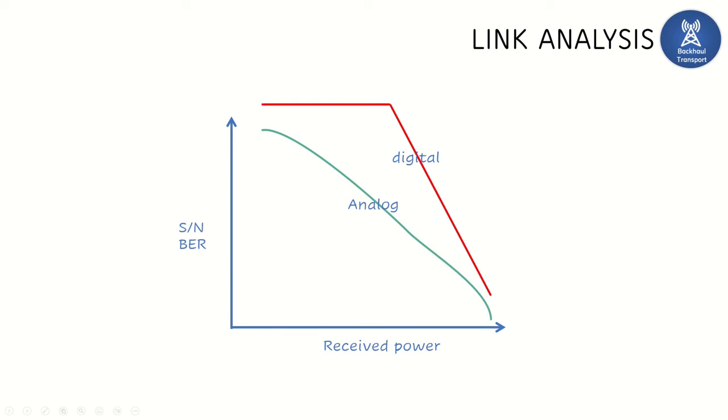As soon as the received power level starts increasing, the analog signal also degrades and the BER of analog signal also keeps decreasing instantaneously. But in a digital signal it will be in a saturated stage for a while. After getting a good receive power level, the BER value tends to decrease sharply. That's the difference between the analog and digital systems. Thank you viewers.